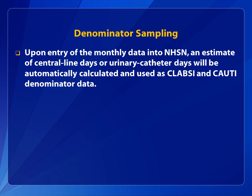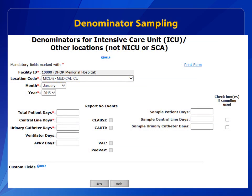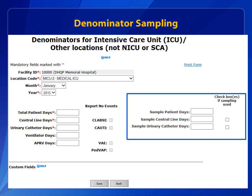This is an example of the data entry screen for denominators for intensive care unit other locations, not NICU or SCA. A new data entry section has been added to the right of the screen that allows the entry of sampled denominator data. If your hospital has been using the sampling protocol for this location and month, you must first check the boxes to the far right for each device day count that was sampled. Then you must enter the sampled patient days and device days.